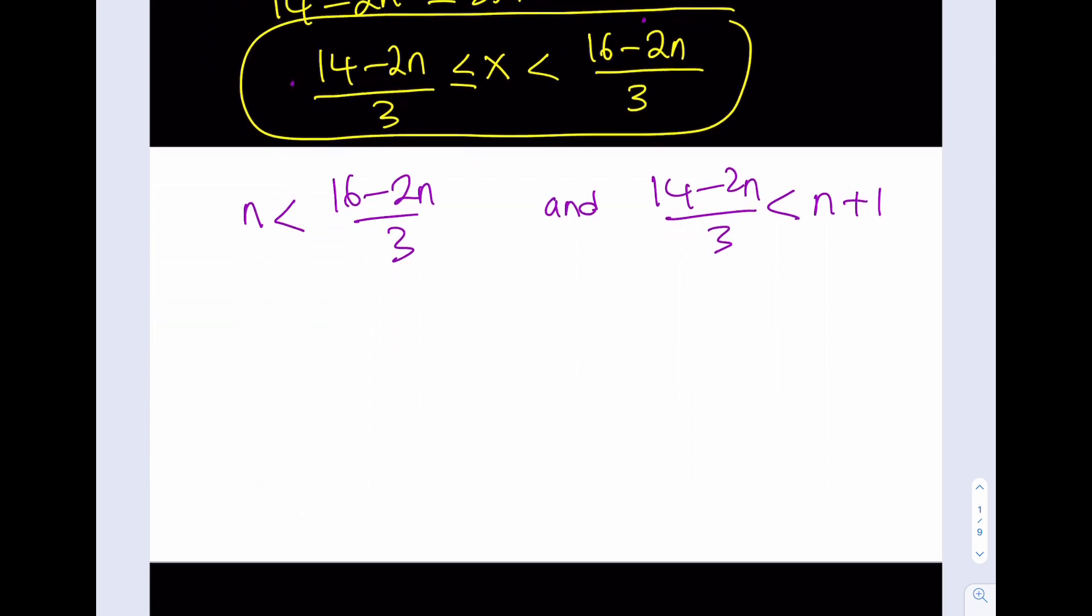I'm going to multiply both sides by 3, and then add the 2n. Awesome. And then divide by 5. So this gives me that.